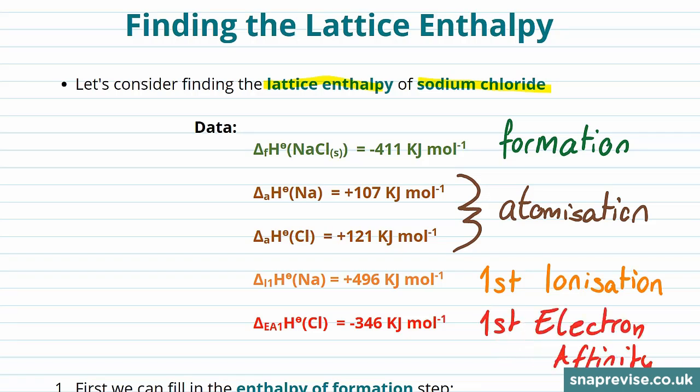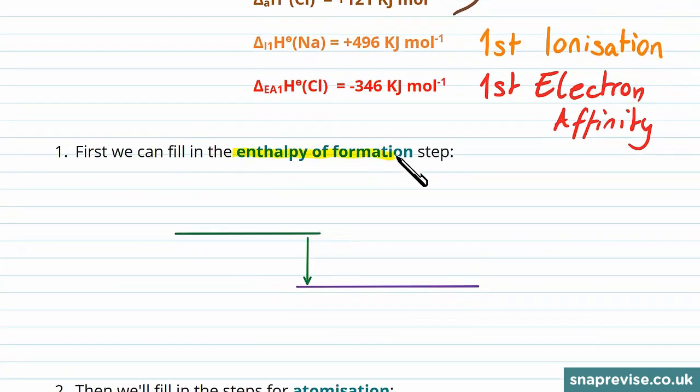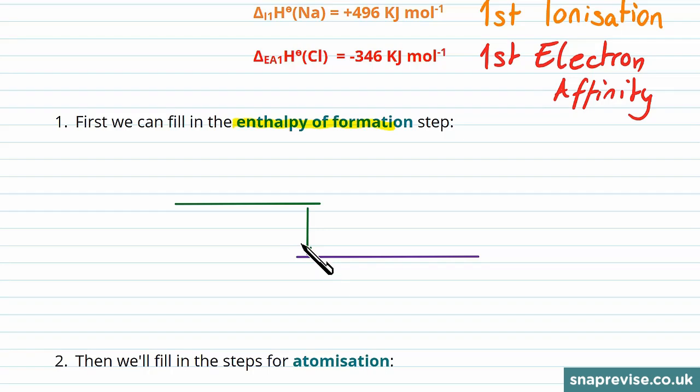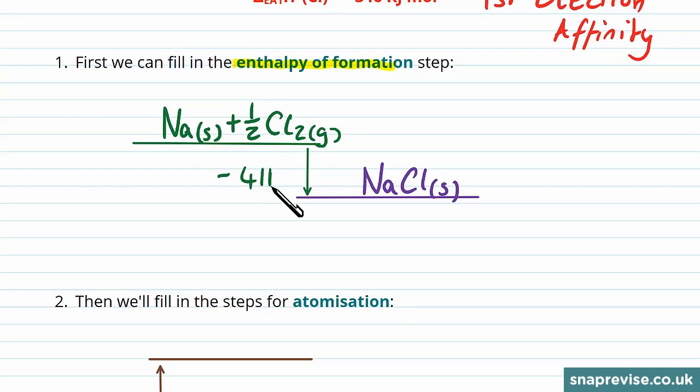The best place to start Born-Haber cycles is with the enthalpy of formation step, so we have this baseline here which will have our ionic solid on it, which in this case is sodium chloride. In formation we form this from the elements in their standard state, so that's solid sodium and chlorine gas, which is diatomic. Using the data we were given at the beginning, we know that this is a change in the energy level of minus 411 kJ per mole.